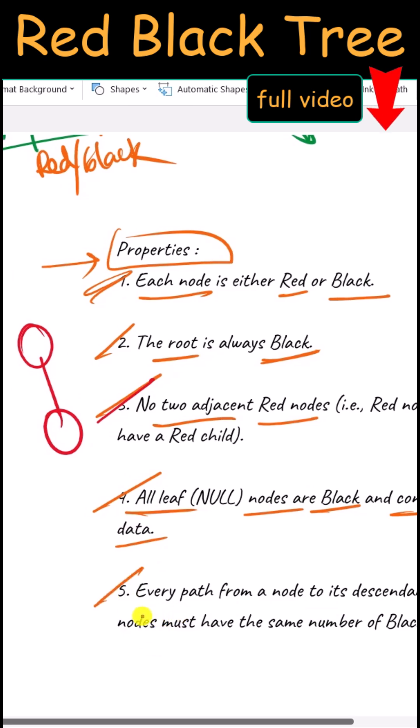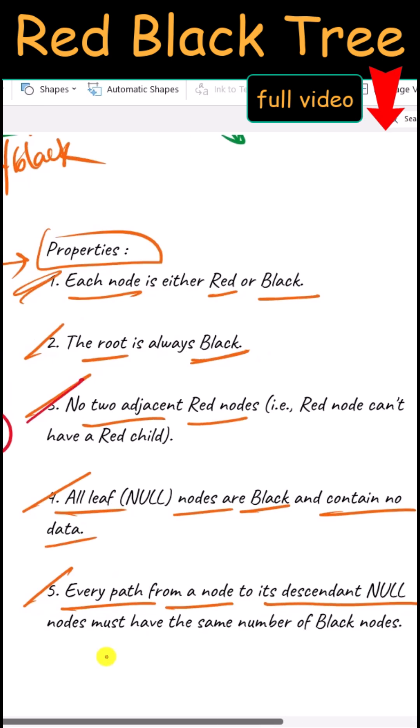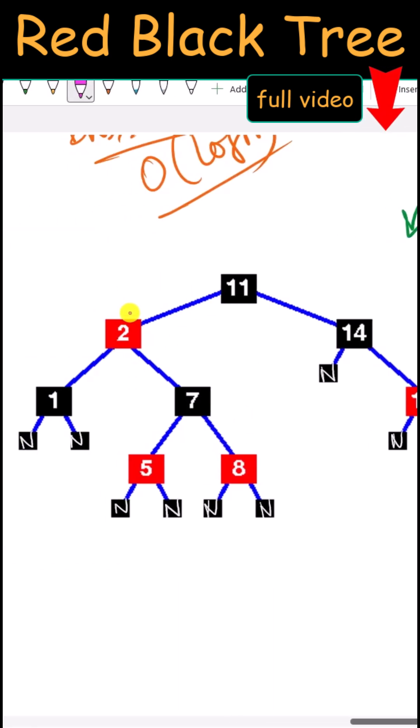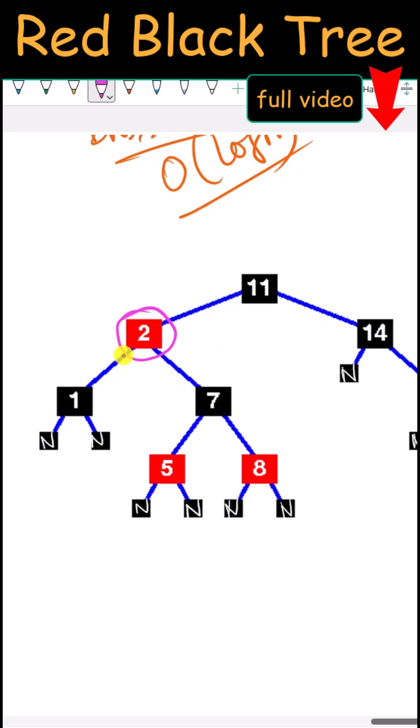The last important property is that every path from a node to its descendant null node must have the same number of black nodes. For example, suppose you have selected this node. Now, every path from this node to its descendant null nodes...